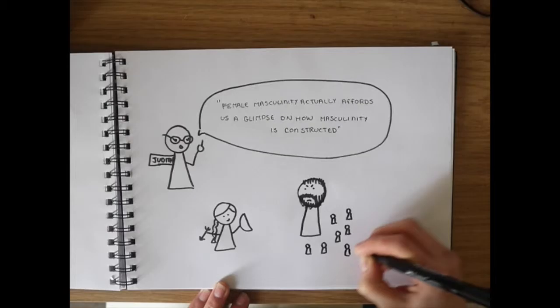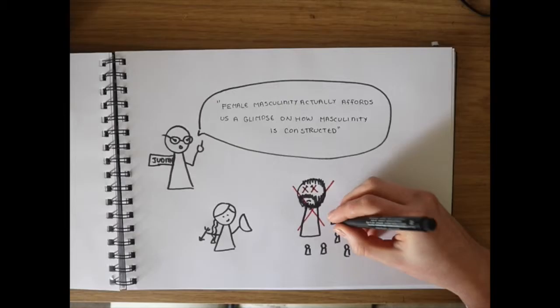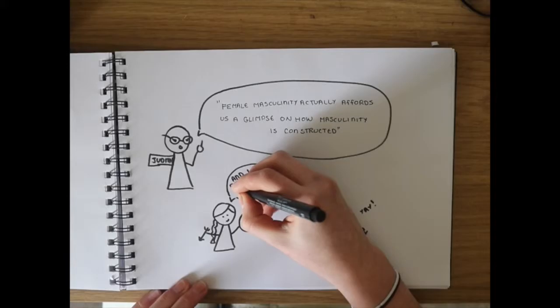As Judith Halberstam mentions, female masculinity actually affords us a glimpse of how masculinity is constructed. Katniss's biggest opponent is President Snow, a strong male character who holds power and authority over thousands. Katniss still conquers him.